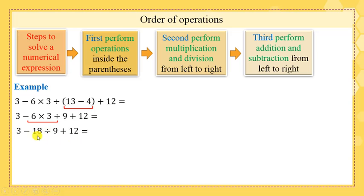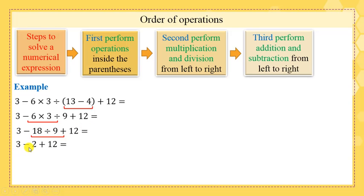We still have division: negative 18 ÷ 9 = negative 2 + 12. We finish multiplication and division. Step 3: addition and subtraction from left to right. We have subtraction first: 3 − 2 = 1 + 12. Then addition: 1 + 12 = 13.